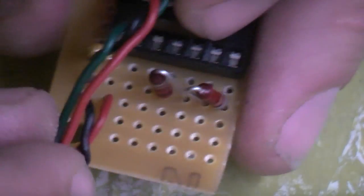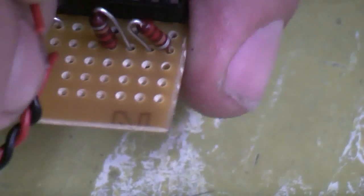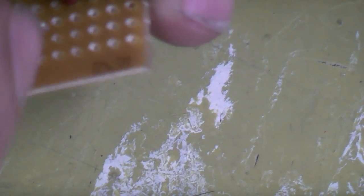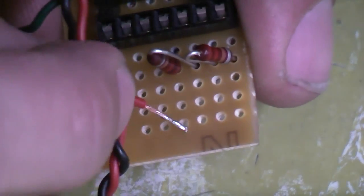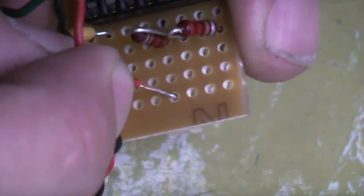Right, so that's the ground for our LEDs done. You can see there just in the same line. And now we just need to add our red and our green power feed for it. And you can see they're going to go in the same line as the resistor.